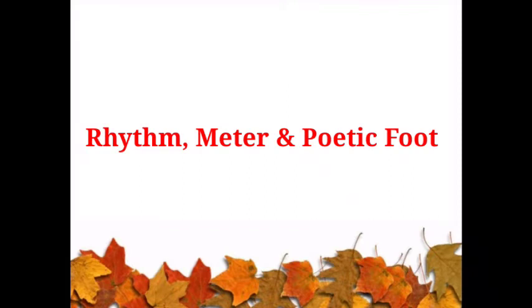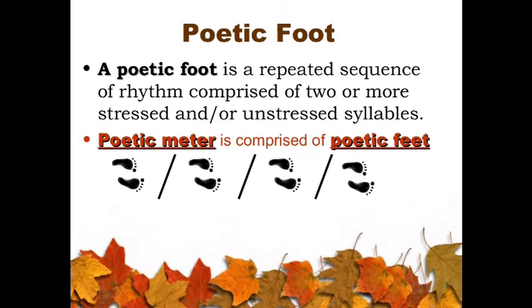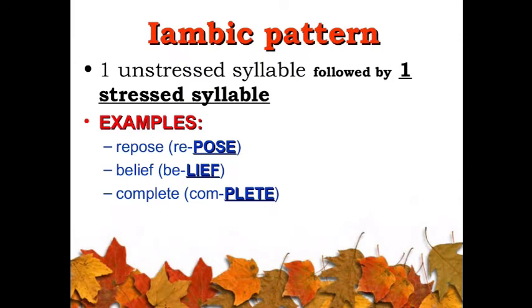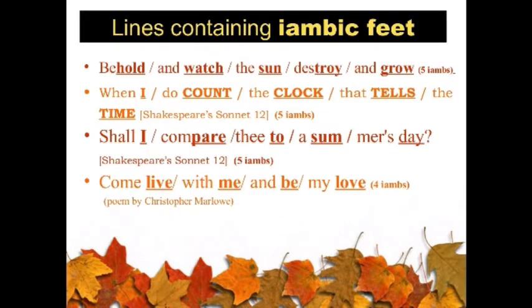Now let's look at how rhythm, meter, and foot are related. A poetic foot is a combination of stressed and unstressed syllables. Let's look at the five types of feet used in poetry. The first one, iambic feet, is a combination of two syllables — the first syllable is unstressed and the second syllable is stressed. Iambic feet is the most commonly used feet in English poetry. Here you have some examples: in the first example, there are five iambic feet in the line. The second and third examples are lines taken from Shakespeare's poems, who normally used five iambic feet. The last example is from Christopher Marlowe, who used four iambic feet in his line.